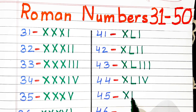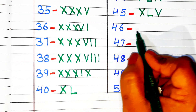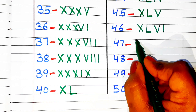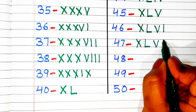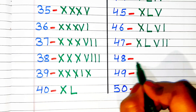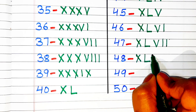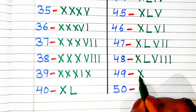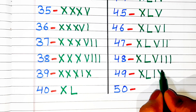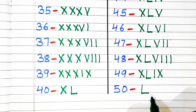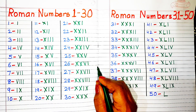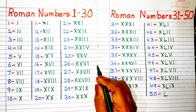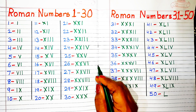46 = XLVI. 47 = XLVII. 48 = XLVIII. 49 = XLIX. 50 = L. If you like this video then please subscribe to my channel and also like and comment on the video. If you find it helpful then share with the needed one. To watch more Roman number videos, the link is given in the description — you can watch from there.